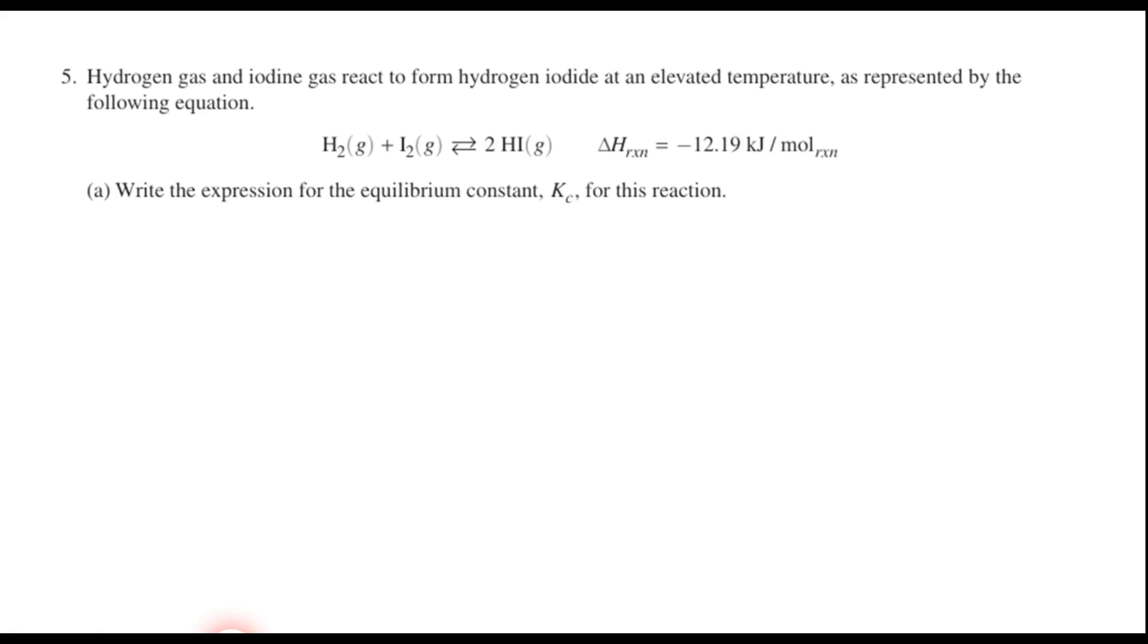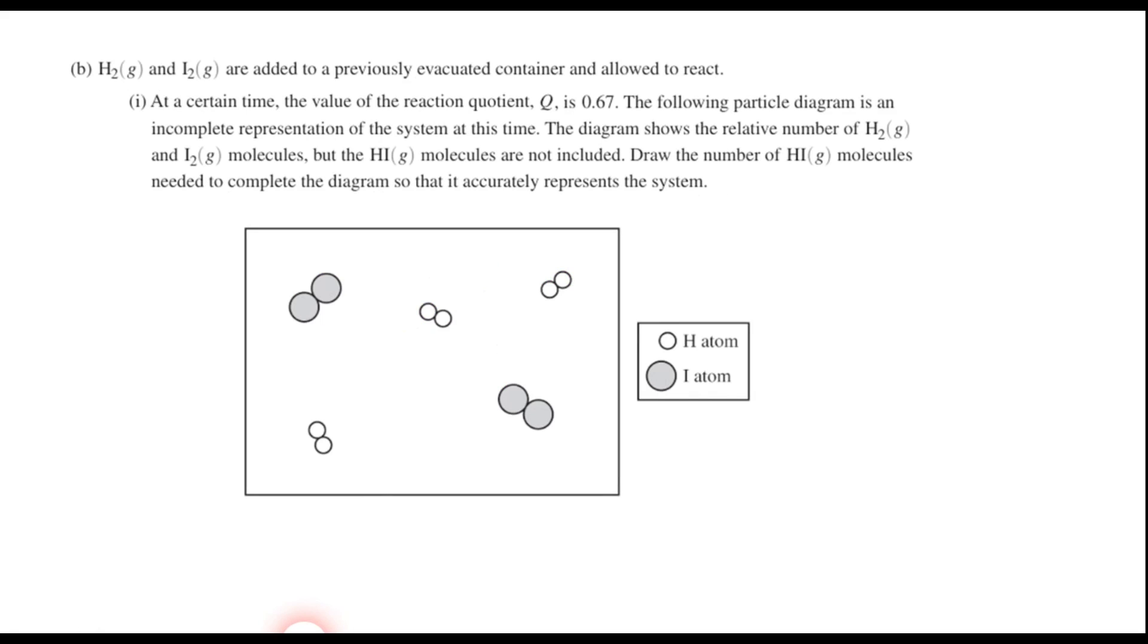Part A says to write the expression for the equilibrium constant, Kc, for this reaction. Well, we know that Kc is just the concentration of the products over the concentration of the reactants raised to the power of the coefficient. So that would be Kc equals the concentration of HI squared all over the concentration of H2 times the concentration of I2. So if you got that, then give yourself a point. Don't forget that an expression is an equation, so that Kc equals needs to be there.